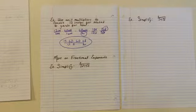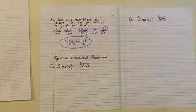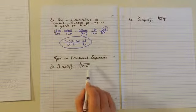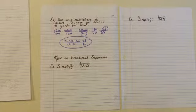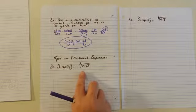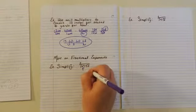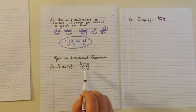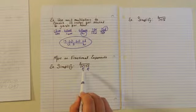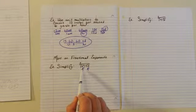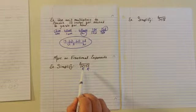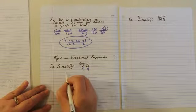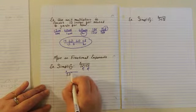More on fractional exponents. We can only simplify these if the digits have a common root. In this case, we have the cubed root of 27 times the square root of 3. We cannot do this as fractional exponents unless we can make both terms have a common root. The trick is to recognize the common root. As it turns out, 27 is 3 cubed — 3 times 3 is 9, times 3 is 27 — so we can rewrite this as the cubed root of 3 cubed.